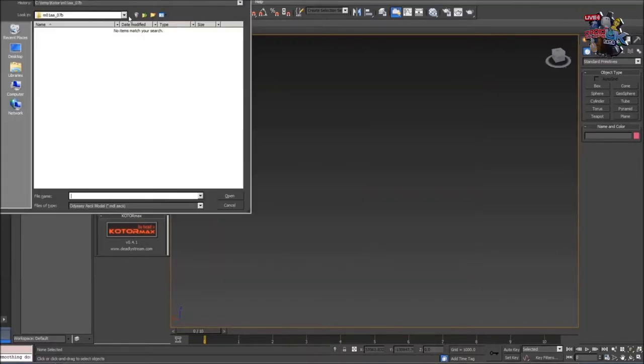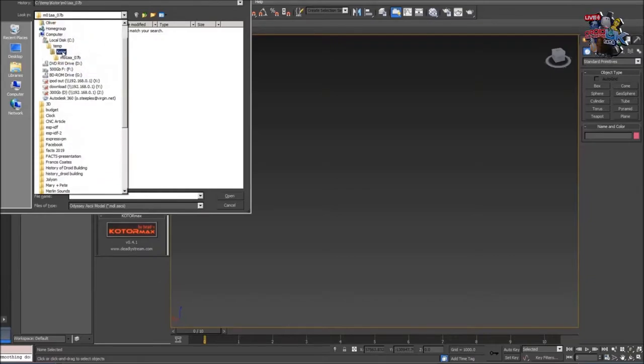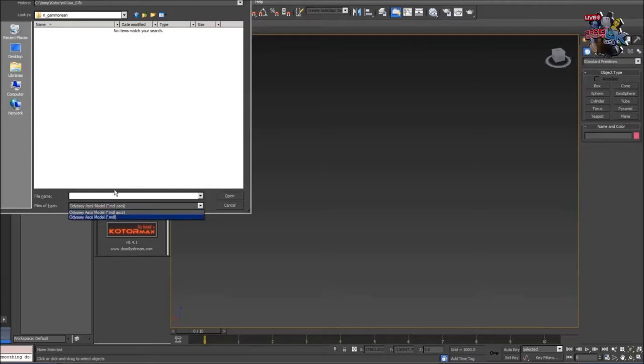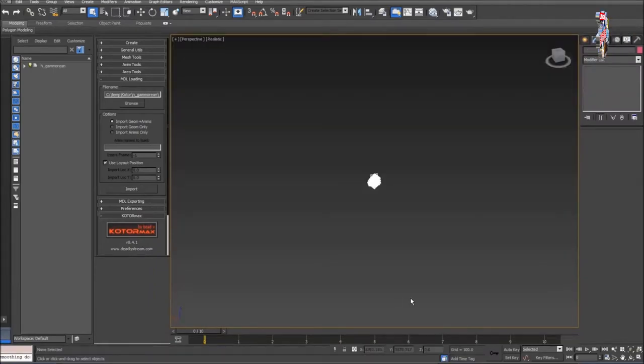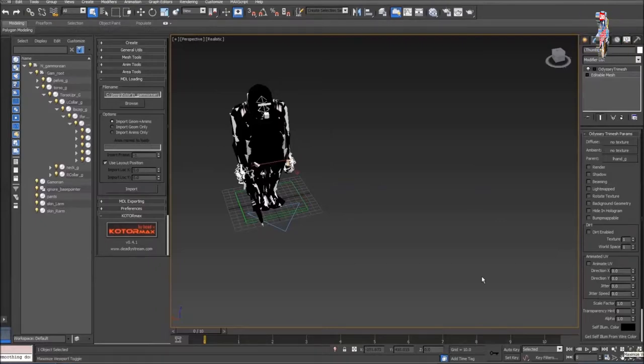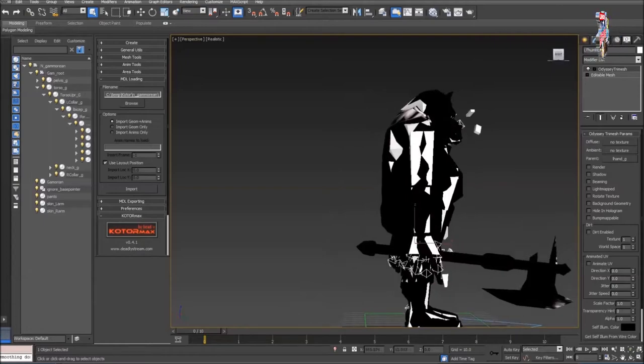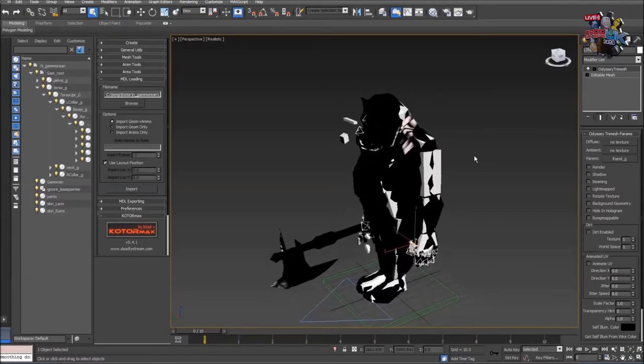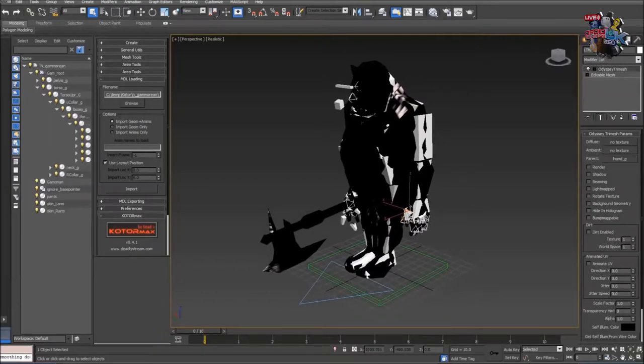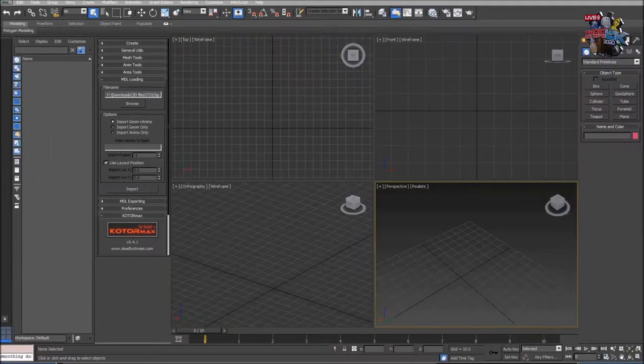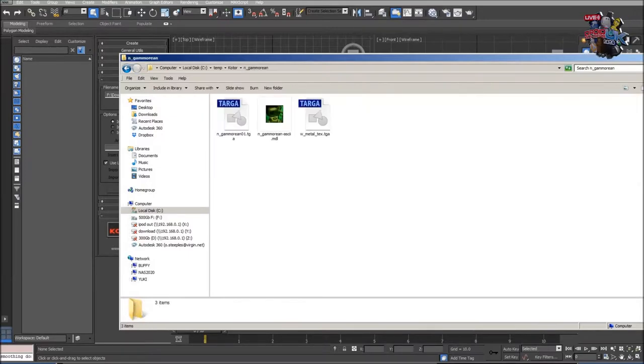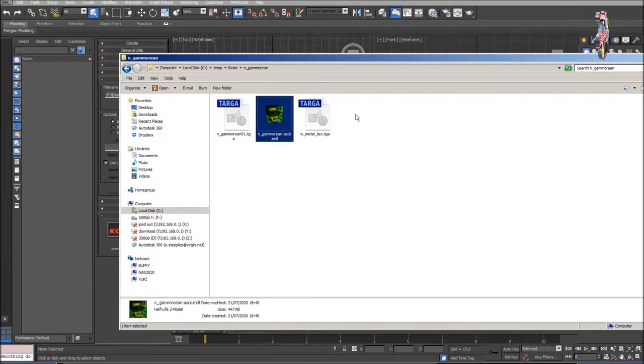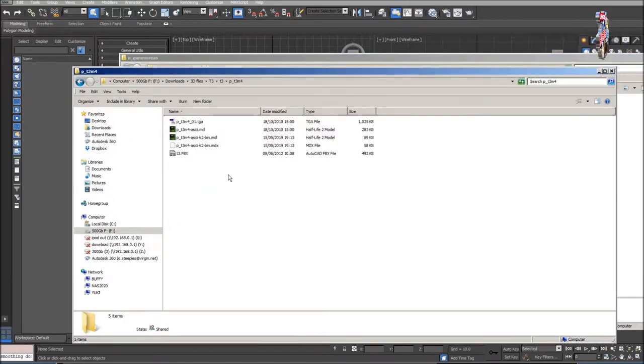And just cut over to 3ds Max and open Gamorrean. This is a Gamorrean apparently and you can just about see the shadow. And you can tell this is one I haven't prepared before. So let's go to one I have prepared before. Let's just get rid of this. When the Kotor tools run it produces various files. So if I just look at the Gamorrean you'll see it has a TGA texture file. Another TGA file and the actual model file.